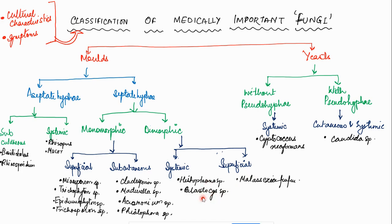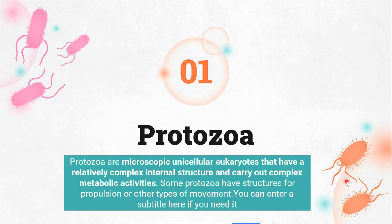Dimorphic septate hyphae molds cause systemic and superficial infections. Systemic examples include Histoplasma and Blastomyces; superficial infection example is Malassezia. Yeasts can be without pseudohyphae or with pseudohyphae. Without pseudohyphae causing systemic infection: Cryptococcus neoformans. With pseudohyphae causing cutaneous and systemic infections: Candida.